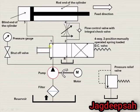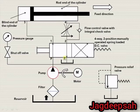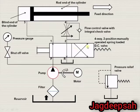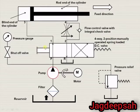This is the direction control valve. There are four ways: P, R, 1, and 2 — four ports, and therefore it is known as a four-way valve. There are two positions — left and right envelope mode — and therefore it is known as a two-position valve. It is manually operated, as shown by this symbol, and it is spring-controlled.